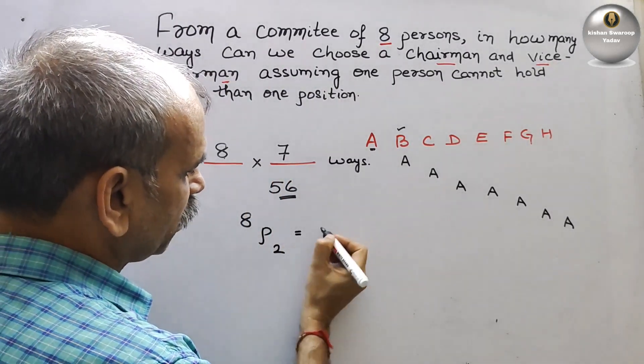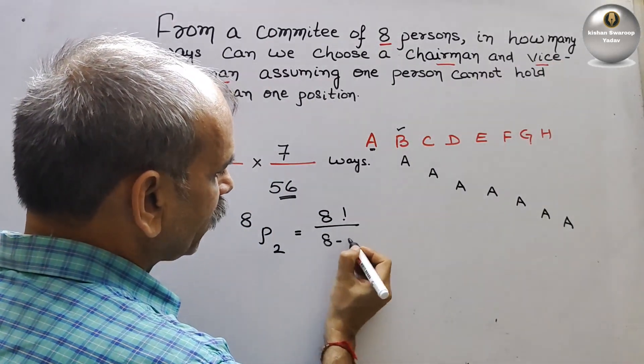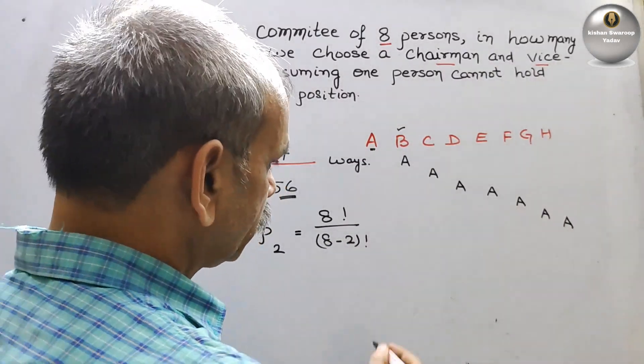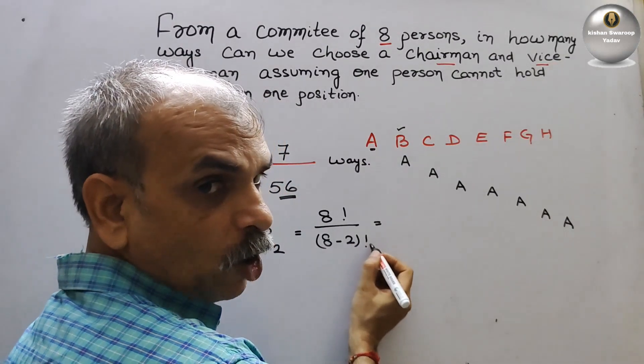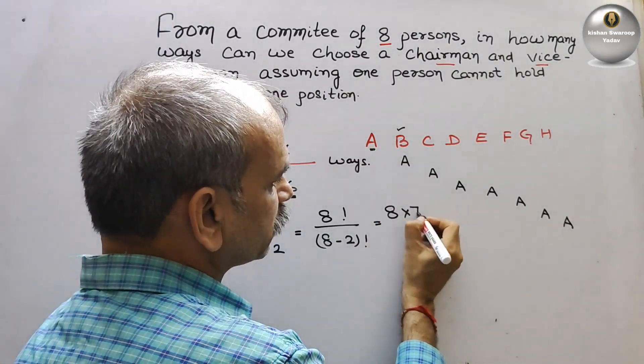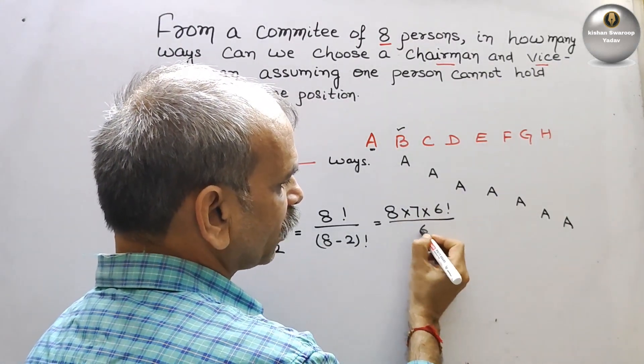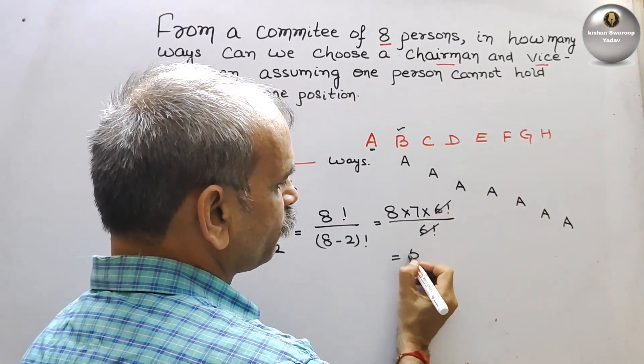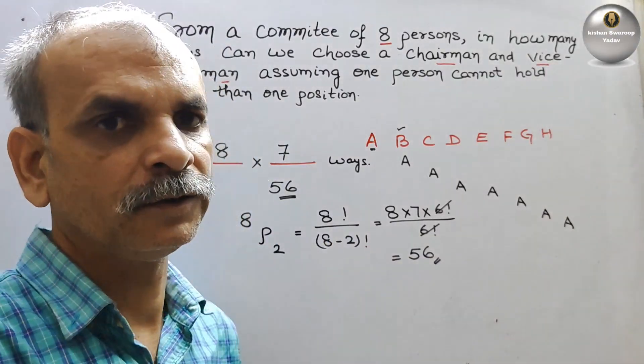This is equal to eight factorial by eight minus two factorial. That is equal to this is six. Six factorial. So here we will write eight into seven into six factorial by six factorial. So this and this will go out. So here we will get 56. So like this we have to solve it.